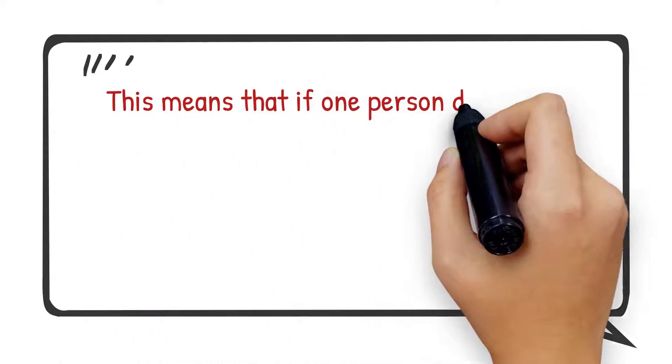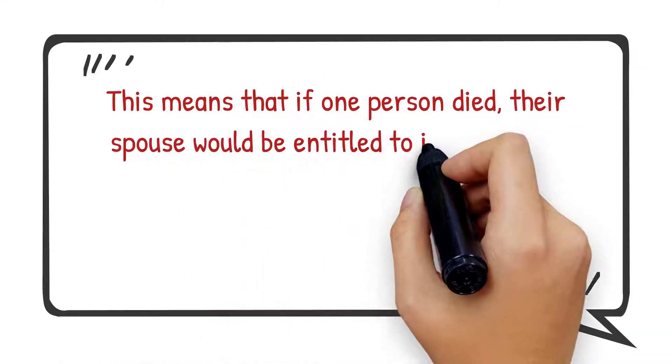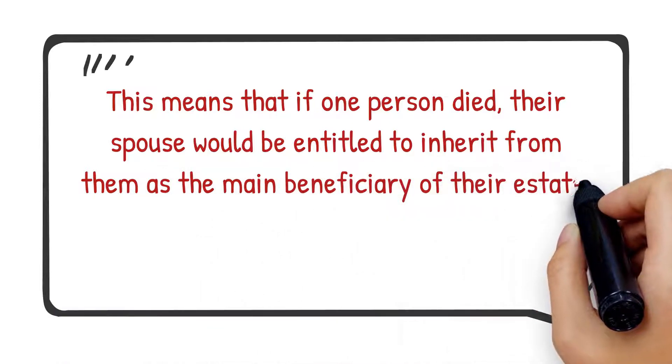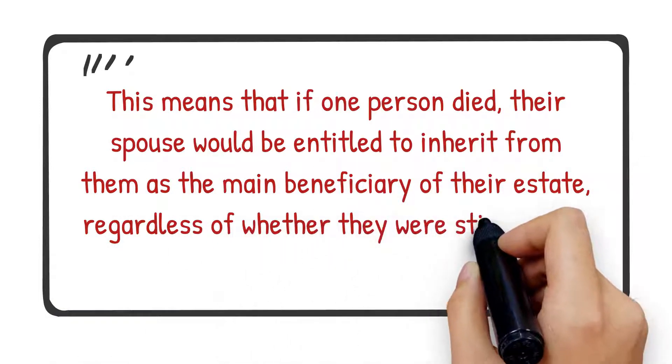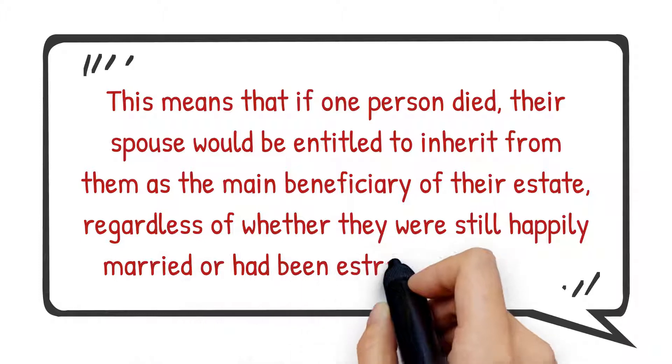This means that if one person died, their spouse would be entitled to inherit from them as the main beneficiary of their estate, regardless of whether they were still happily married or had been estranged for years.